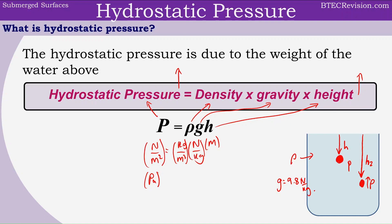Another important point to know is that if we take an object and submerge it under the water with a height h, then the pressure exerted upon it is not dependent upon the area. For example, if we submerge it in a beaker of water or in a river, it doesn't make a difference unless the height changes. If the height is the same, then the pressure experienced is going to be the same.